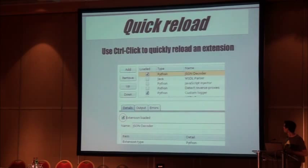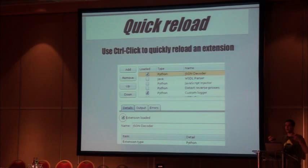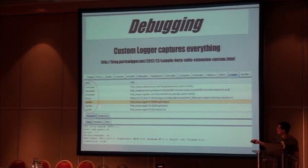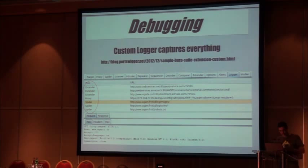When developing, you need to quickly reload extensions. Click the extension with Ctrl+Click and it will reload — unload and reload in one click. No need to unload, wait, load, wait. Custom logger is the only way I know to see every piece of traffic generated by Burp including spider, scanner, and extensions. If you're doing serious debugging, it's mandatory. Note that if you're debugging macros, there's a specific tool for that.